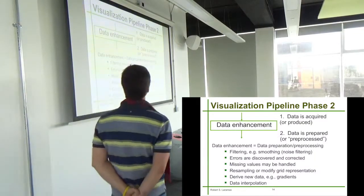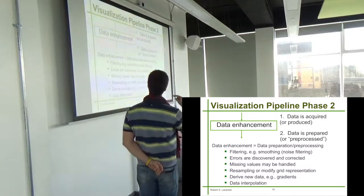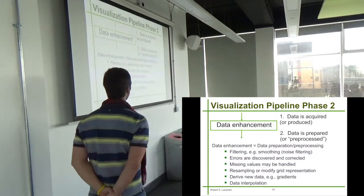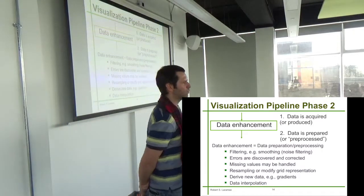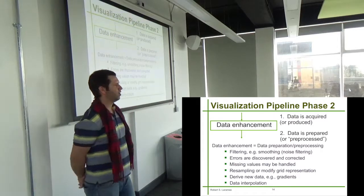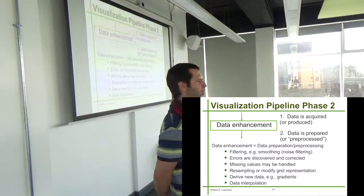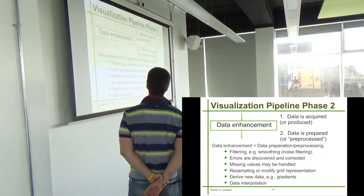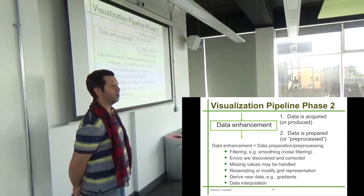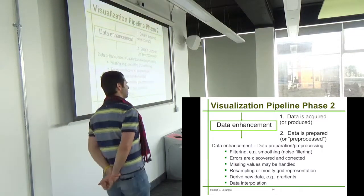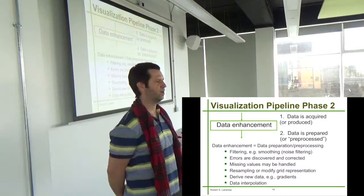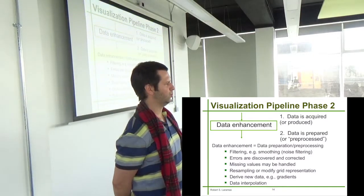Data enhancement is a little bit more mysterious. It sits between data acquisition and the visualization phase. Data is prepared — sometimes this is called preprocessing. There are lots of different ways to preprocess or modify data to prepare it for visualization. Sometimes there's a smoothing phase where noise is eliminated. Sometimes there's an error discovery and elimination phase — that happens a lot. You discover errors in the data and then you want to eliminate them.